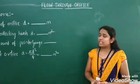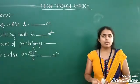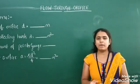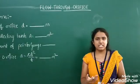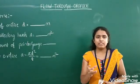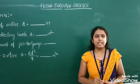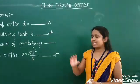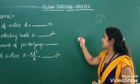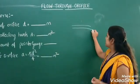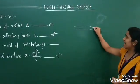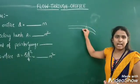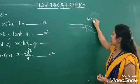Let us see how to conduct the experiment on flow through orifice. Before going to start with the experiment, you must know what you mean by the orifice. An orifice is a small opening provided at the bottom of the tank to discharge water. Whenever such an opening is provided, water particles emerge towards the orifice. The water coming out of the orifice is called the jet of water. This jet of water reaches a smaller diameter at some point, and that point is called the vena contracta.